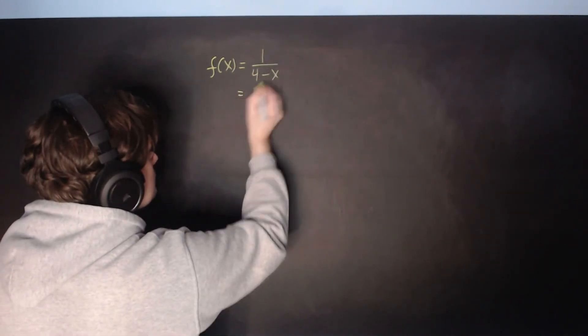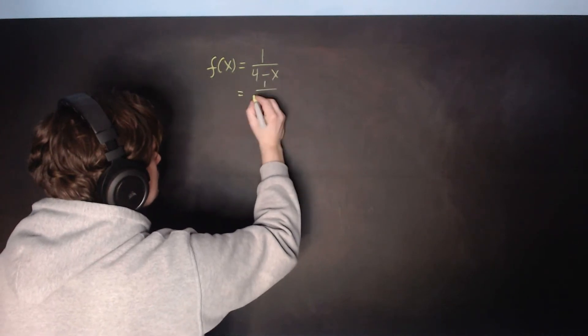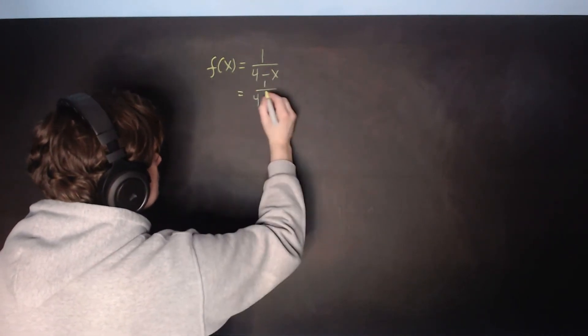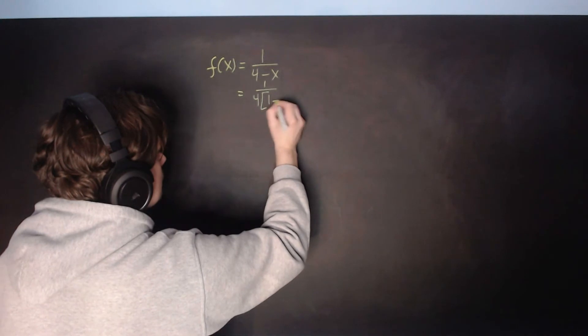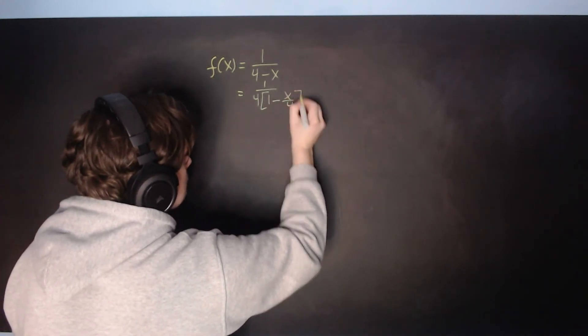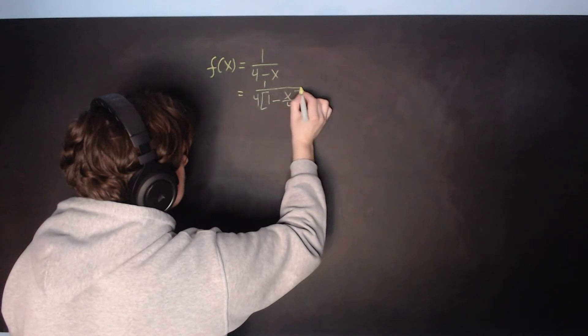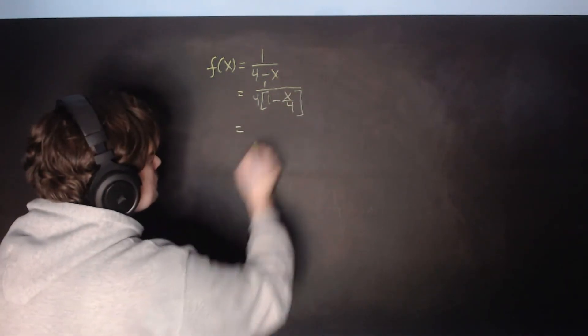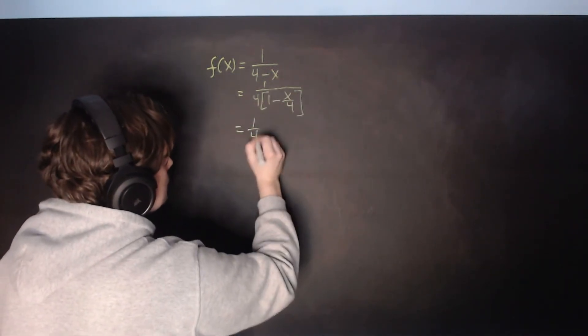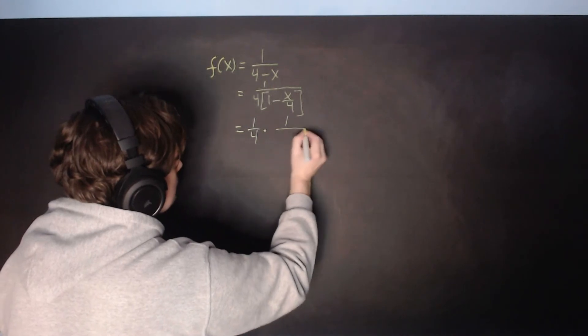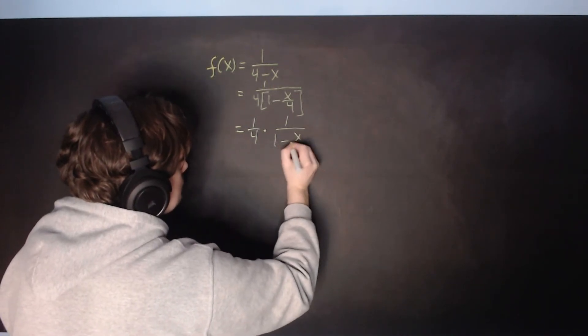So the first stage in the process is to rewrite this so it looks like 1 over 4, and then it's going to be 1 minus x over 4, and then close the bracket. Separate it off to 1 fourth, and then you have this other piece 1 over 1 minus x over 4.